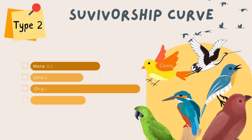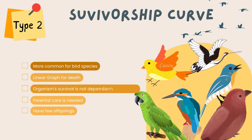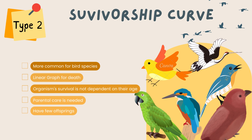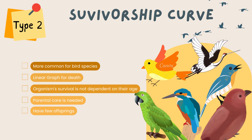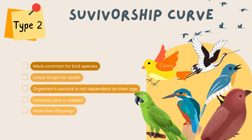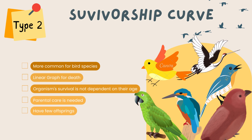Type 2 survivorship curve is more common for bird species. Unlike type 1 and type 3, this type has a linear graph for death. The organism's survival is not dependent on their age, but almost like type 1, significant parental care is needed, and they have few offsprings as well.